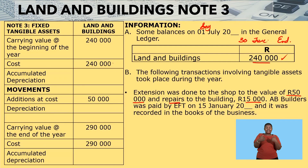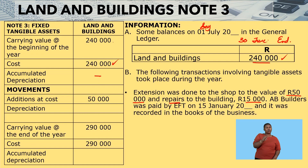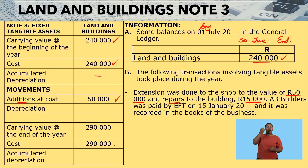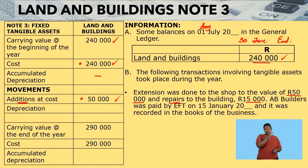At the beginning, the cost is $240,000. Because we don't have accumulated depreciation on our land and buildings, our carrying value is also $240,000. When we do extensions to the property, it comes in as additions at cost: $50,000. So the cost at the end is $240,000 plus $50,000, which gives us $290,000.